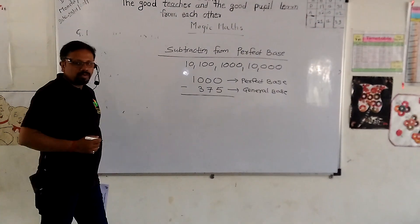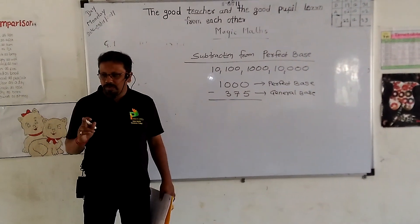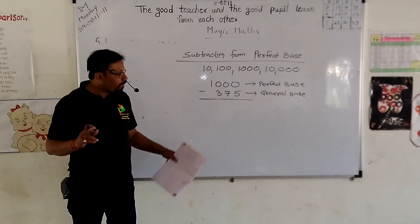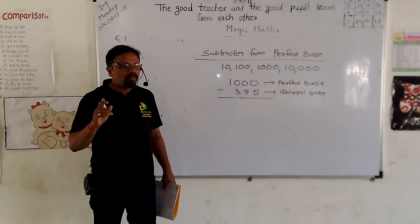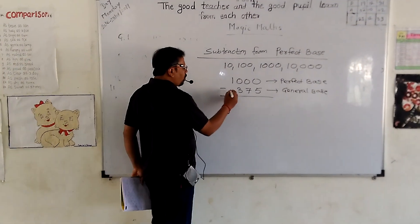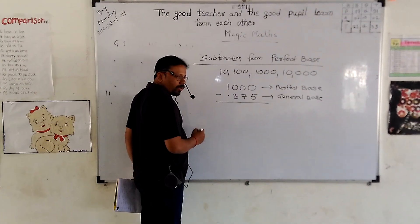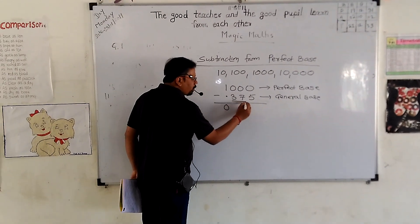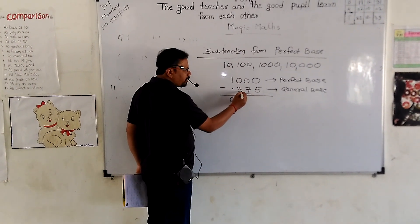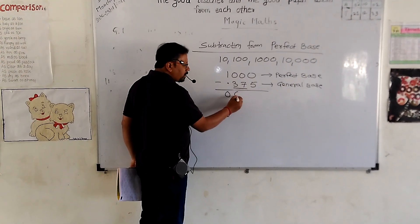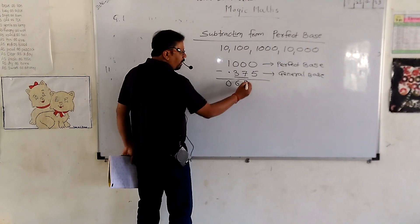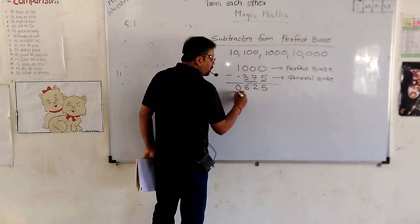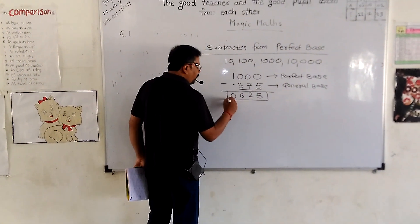We have to subtract three seventy-five from one thousand. First of all, we give a dot here — one minus one is zero. Then subtract both remaining digits from nine: nine minus three is six, nine minus seven is two. And find the complement of the last digit using ten: ten minus five is five. So our answer is six hundred and twenty-five.